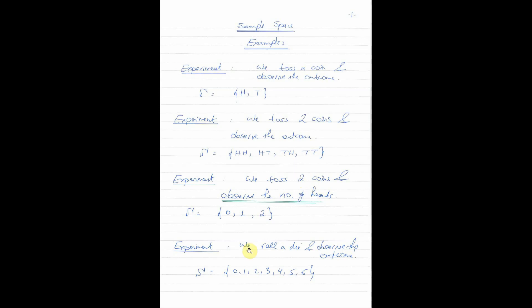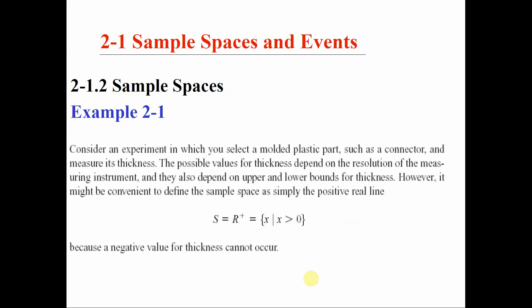The last simple experiment: we roll a die. The die has six faces from one to six. So what is the sample space? Our sample space simply contains {1, 2, 3, 4, 5, 6}. This is our sample space containing only six outcomes when rolling a die.